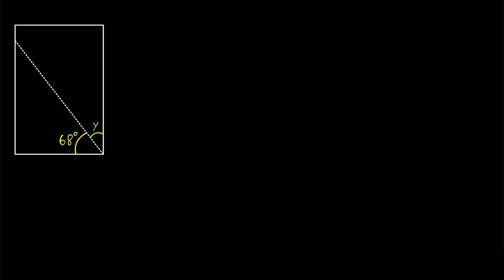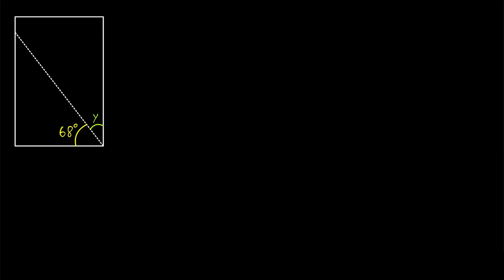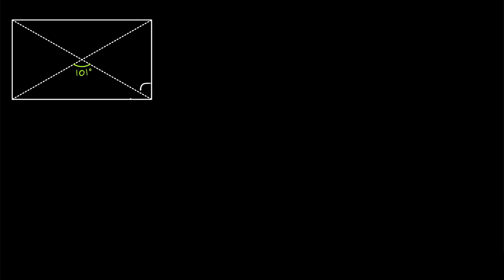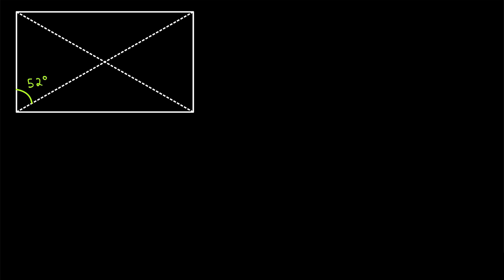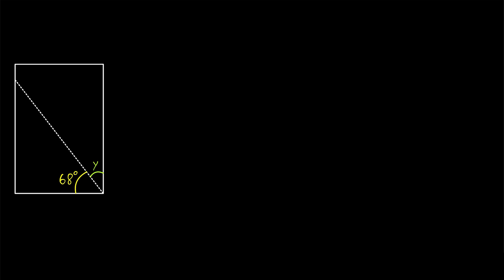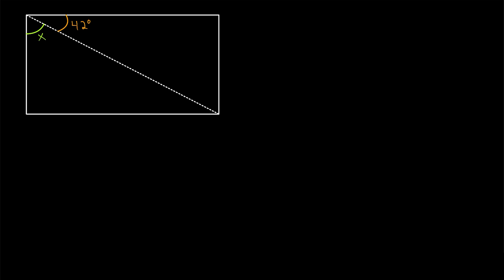For these first few problems, we just want to find the missing angle x or y, or in this case a. For another problem, we're going to find all of the missing angles given the measure of one angle. We'll do a similar thing for the last exercise, but with the angle given in a different spot. The key fact to remember is that the four angles of a rectangle are 90 degree angles.